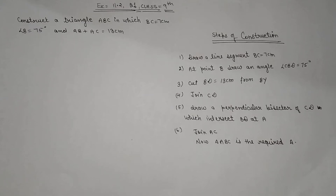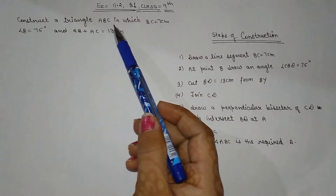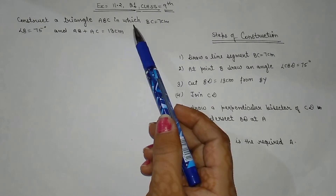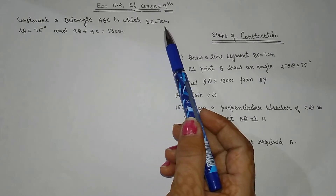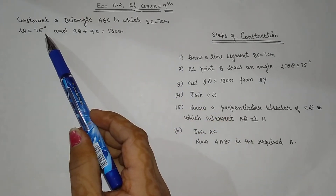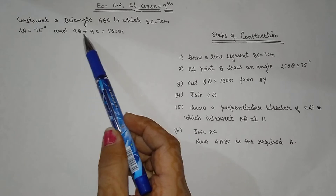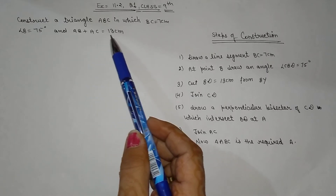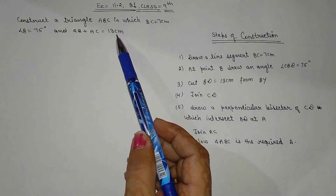Good morning students. I hope you all are doing well. Today I am going to discuss with you question number one from exercise 11.2, class nine. The question is: construct a triangle ABC in which BC is 7 cm, angle B is 75 degrees, and AB plus AC is 13 cm.